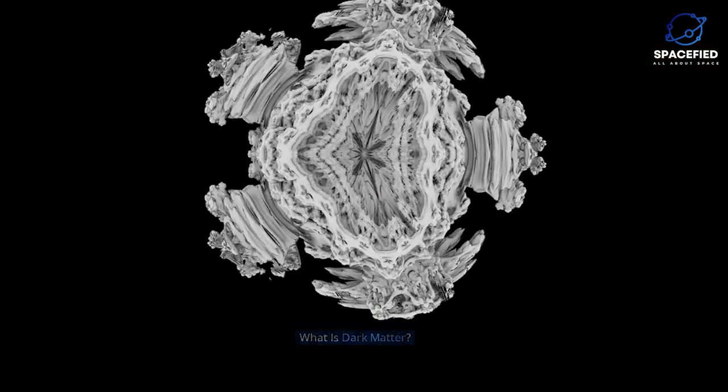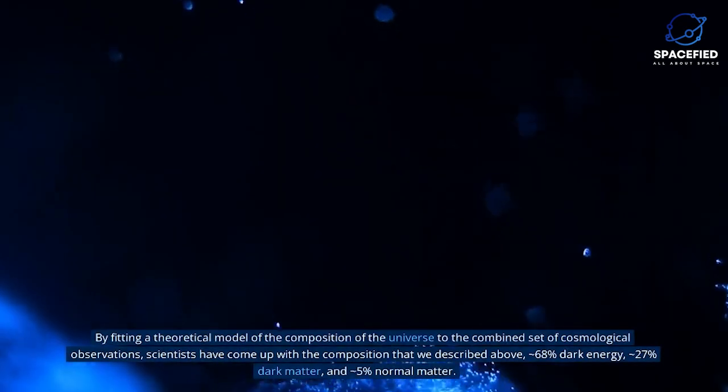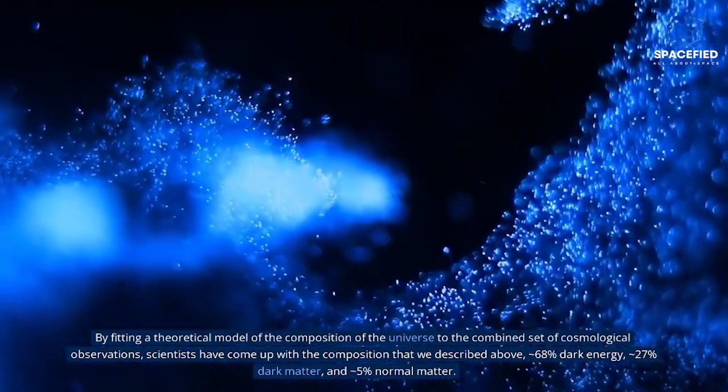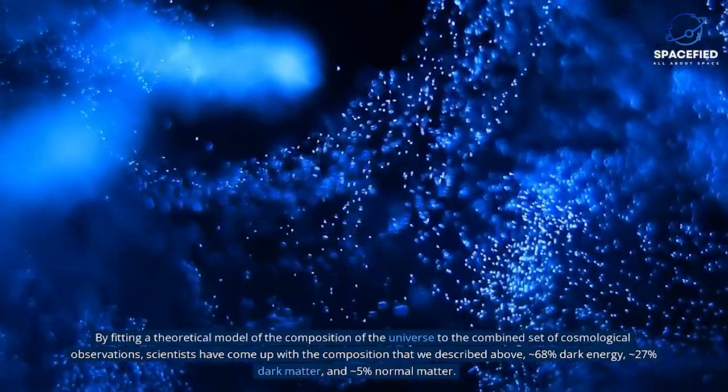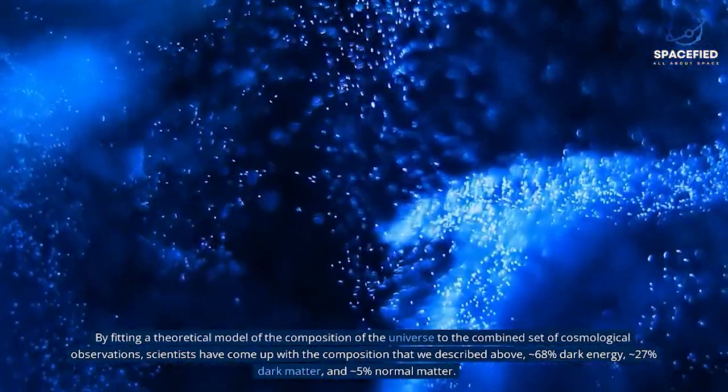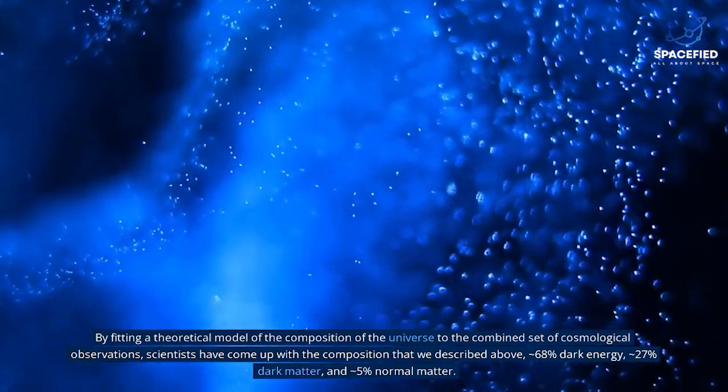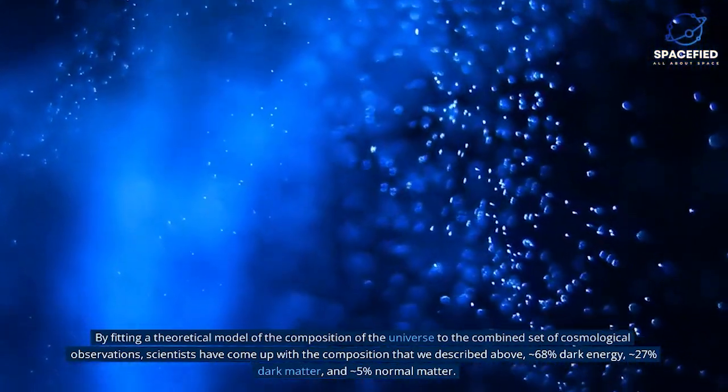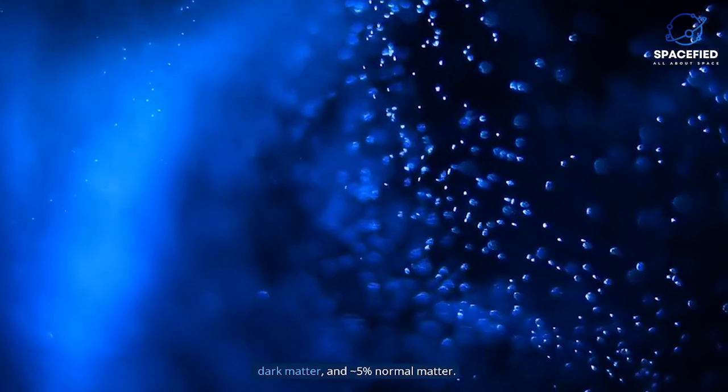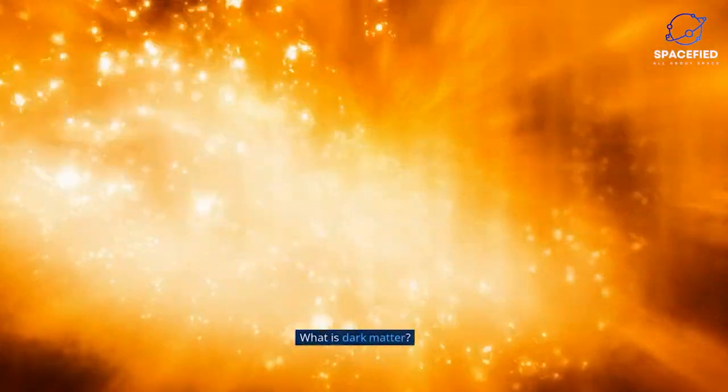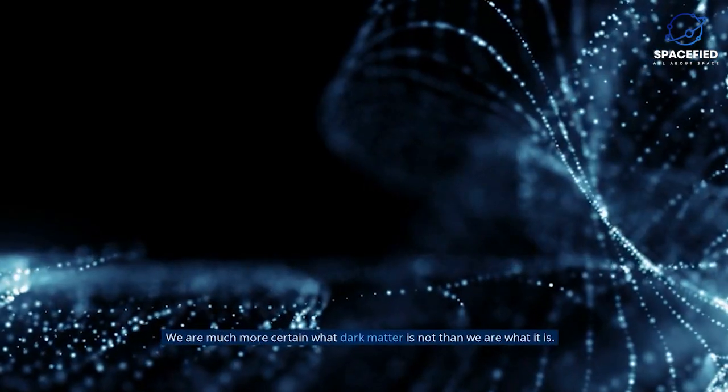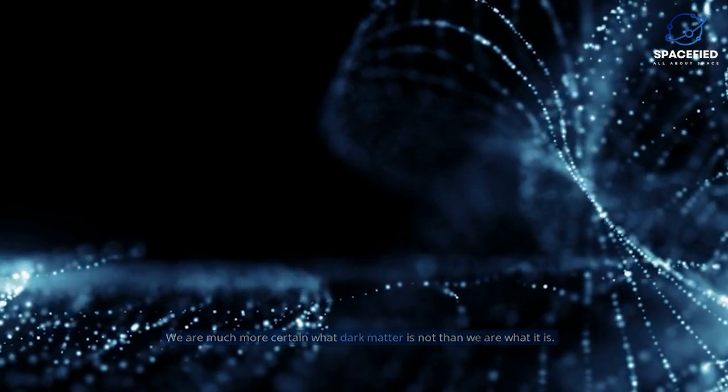What is dark matter? By fitting a theoretical model of the composition of the universe to the combined set of cosmological observations, scientists have come up with the composition that we described above: approximately 68% dark energy, approximately 27% dark matter, and approximately 5% normal matter. We are much more certain what dark matter is not than we are what it is.